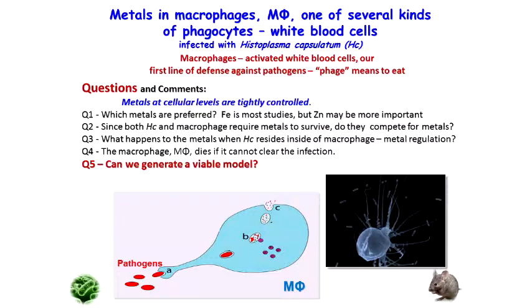Metals in cells are tightly controlled. Iron has been most studied, but zinc seems to be more important. Since both this disease and the macrophage require metals, do they compete for metals? Certainly they do. And can we figure out how they compete? What happens to the metals when this infection resides inside the macrophage? Remember, the white blood cell is supposed to bring in the disease and kill it — not so easy. First it has to be activated, but this cartoon gives you the idea: you take the pathogen into this big white blood cell and then you chew it up through a lysing process, but it doesn't get it all. The question is, is there any way to make this process more effective?